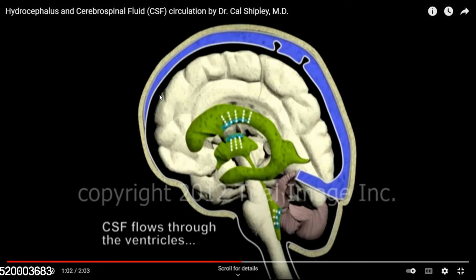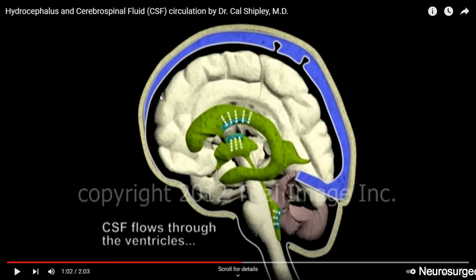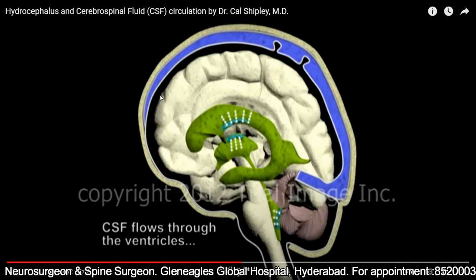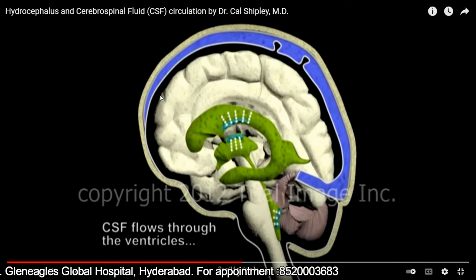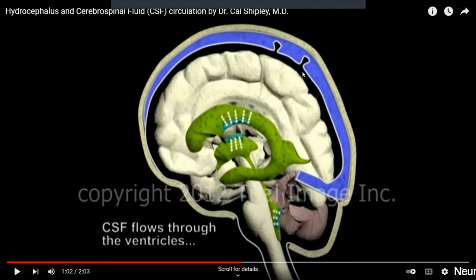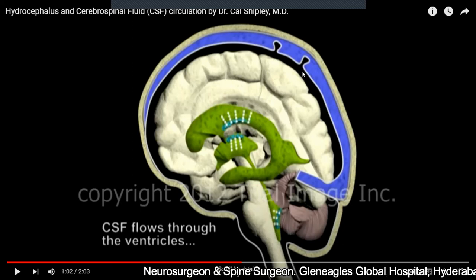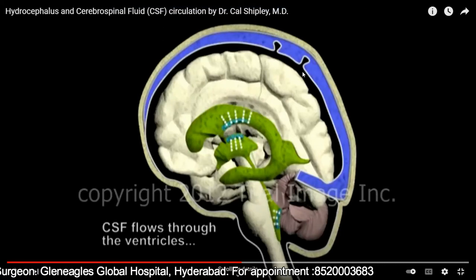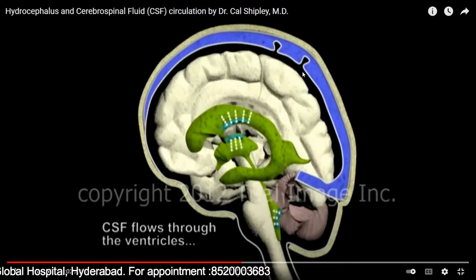Ice cream is similar to your brain — a soft, very important structure. Suppose I shake the box: your brain, that is the ice cream, will get injured. So God has given protection against that injury — the space between the box and the ice cream is filled with a lubricating, cushioning fluid. This cushioning fluid is the CSF. It protects the brain against injury from the skull. If there's a hit, the brain moves forward but the CSF provides protection.